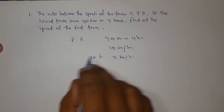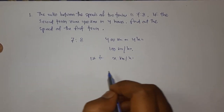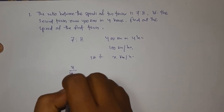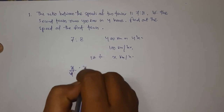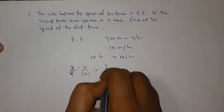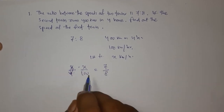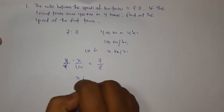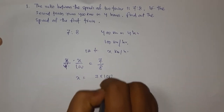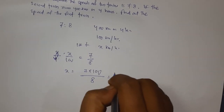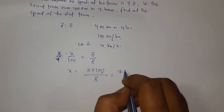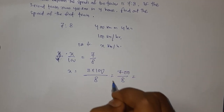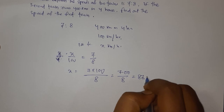Using the ratio 7 is to 8: x by 100 equals 7 by 8. Cross-multiplying: x equals 7 into 100 by 8, which is 700 divided by 8. The answer is 87.5 kilometers per hour.